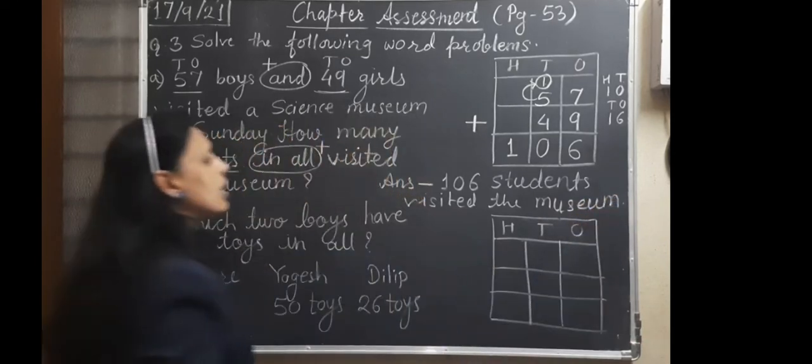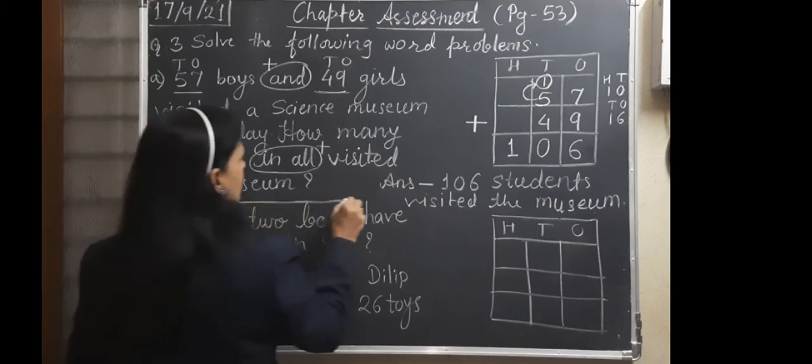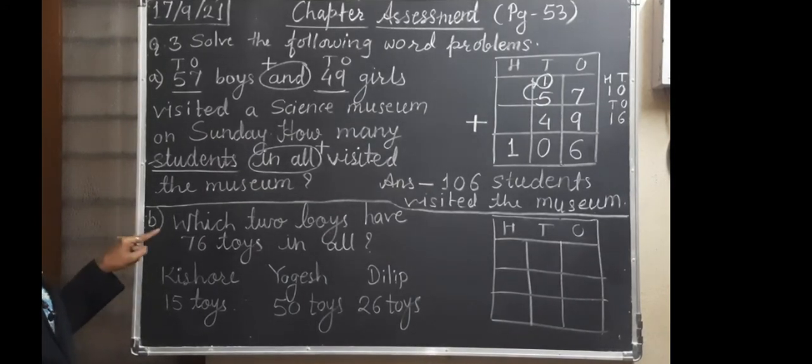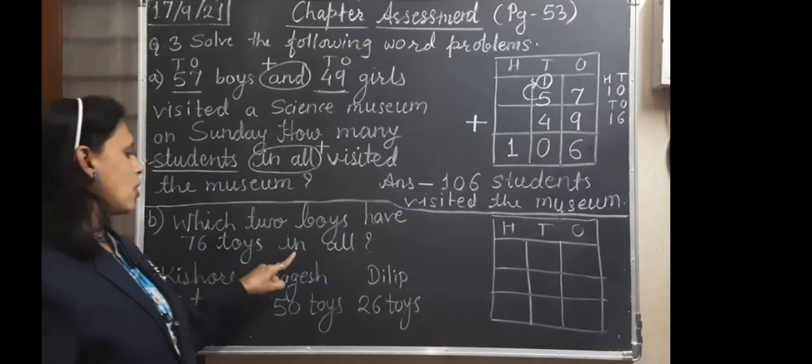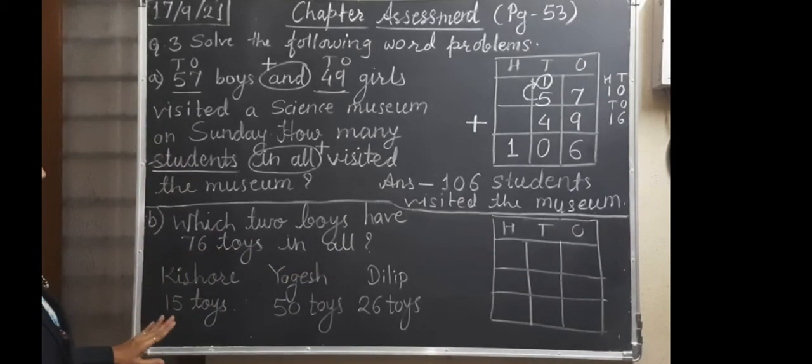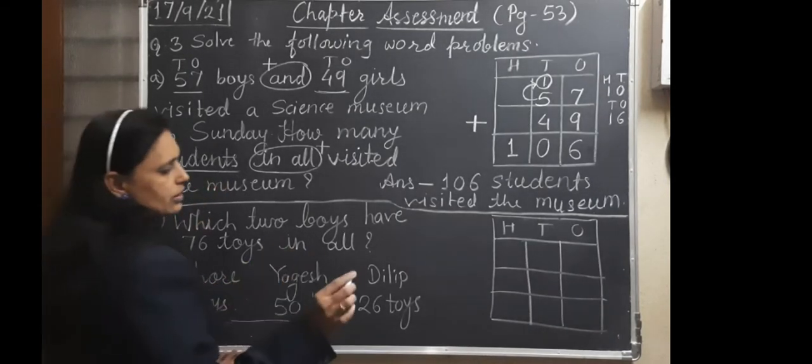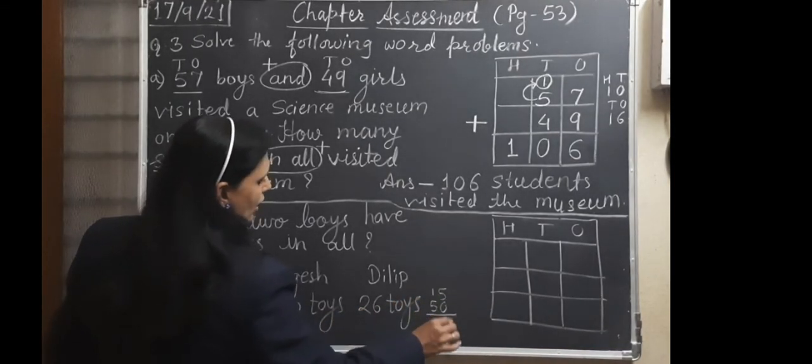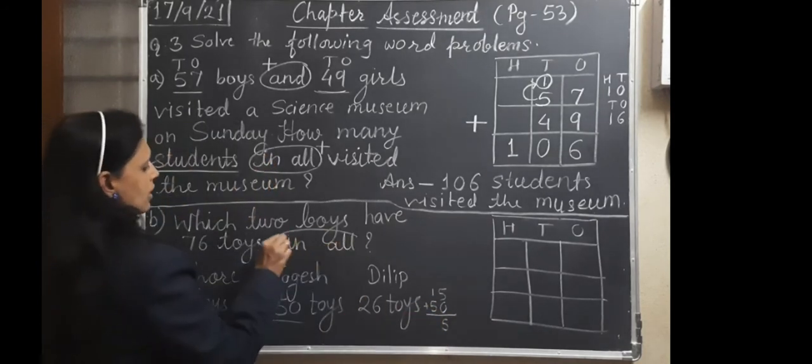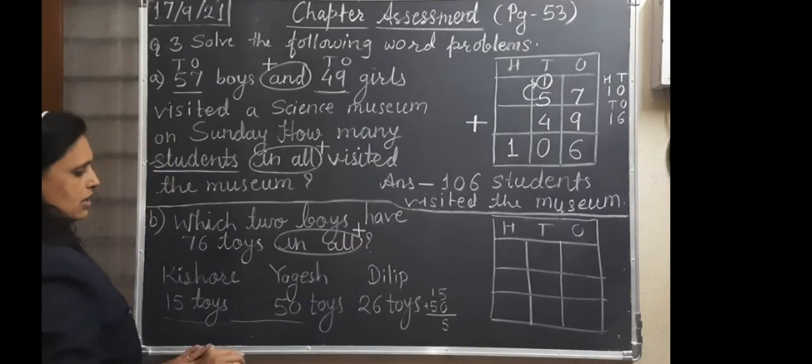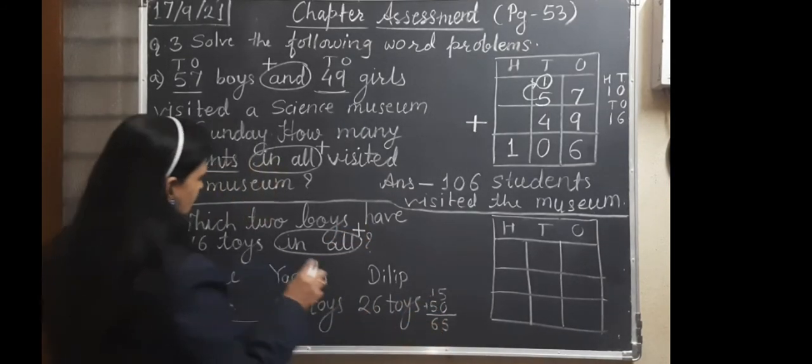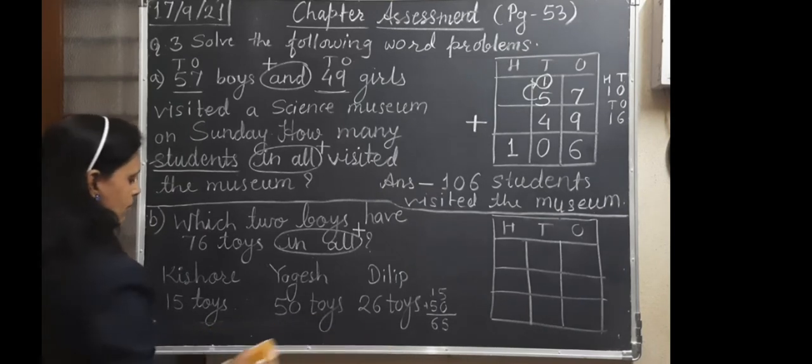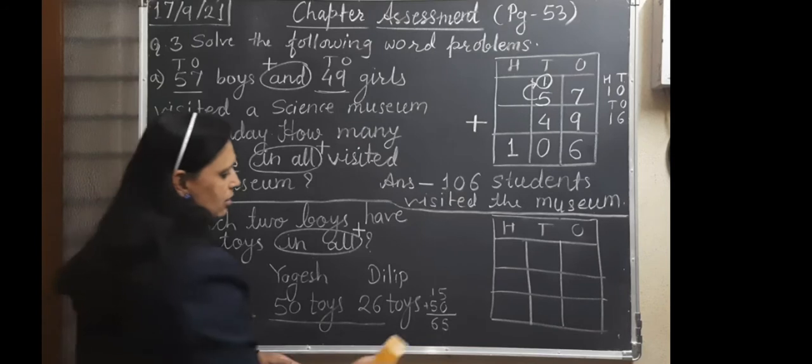We have completed first A from third question. Then we will see B word problem. Which two boys have 76 toys in all? So what we have to do? We have to add first these two numbers. So this work you have to do as a rough. So we will do here 15 and 55 addition. Because in all word is there, then we are going to plus. So 5 and 1, 6. Is it coming 76? No. So these are not there.